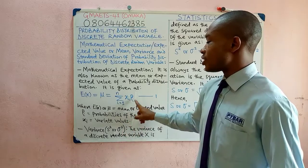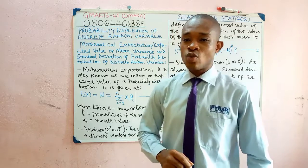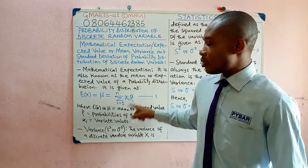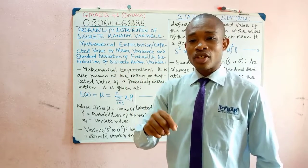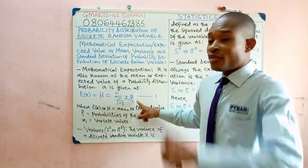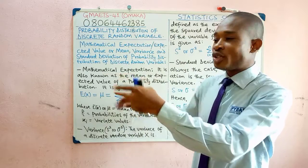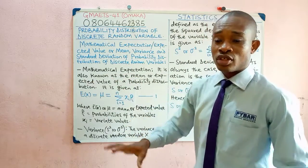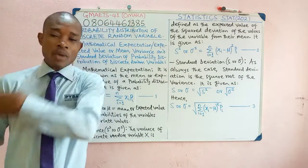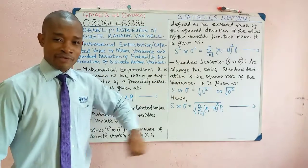It's equal to summation xi times pi, where xi represents the varied values and pi represents the probabilities of the values. This formula is quite similar to the mean under our measures of central tendency. The only difference is that frequency has been replaced with probability here.